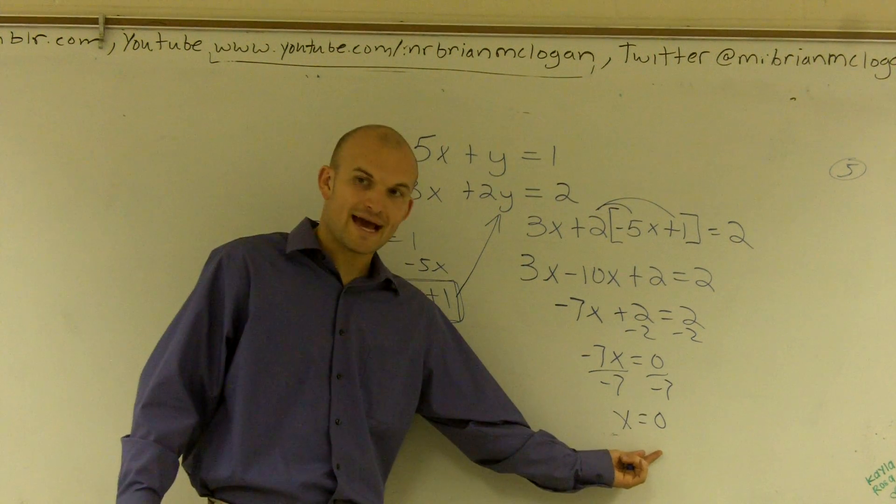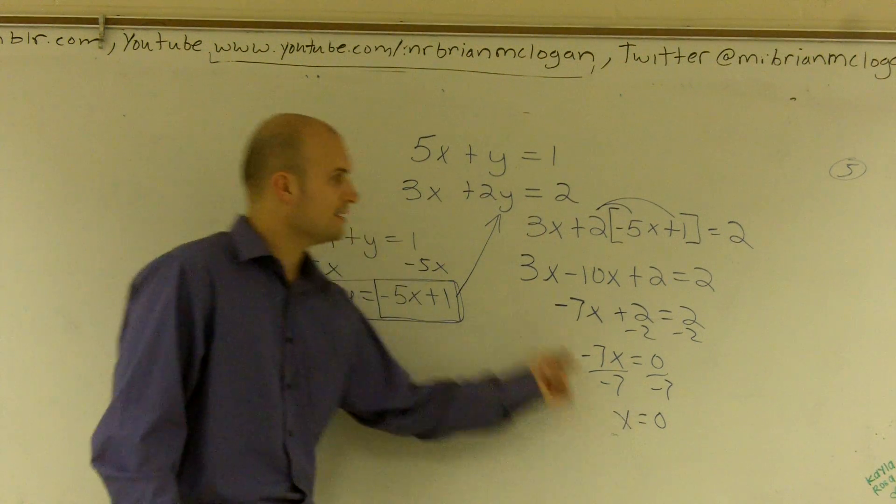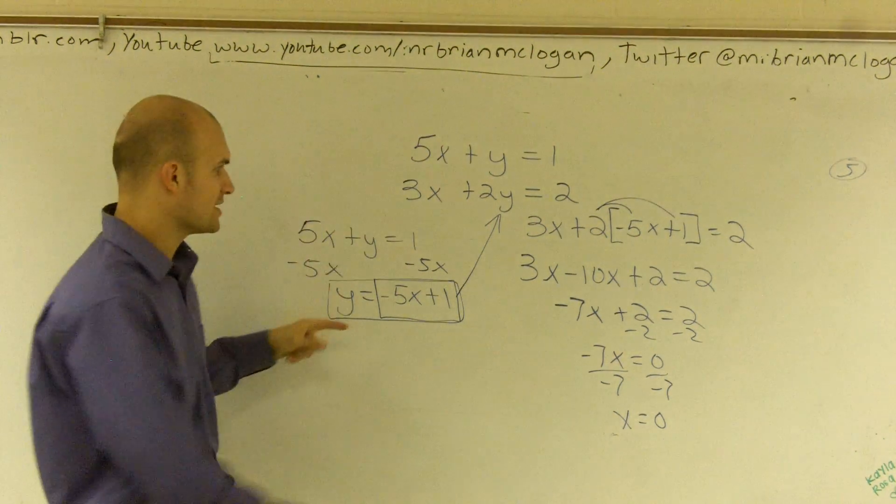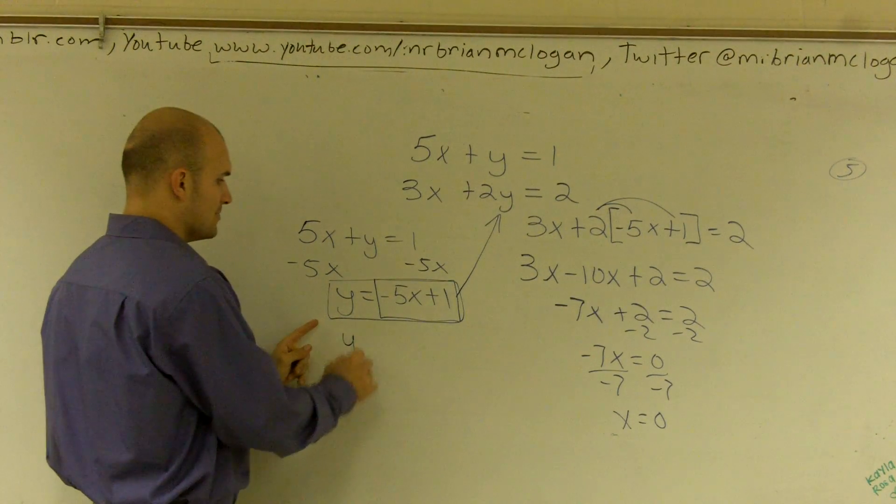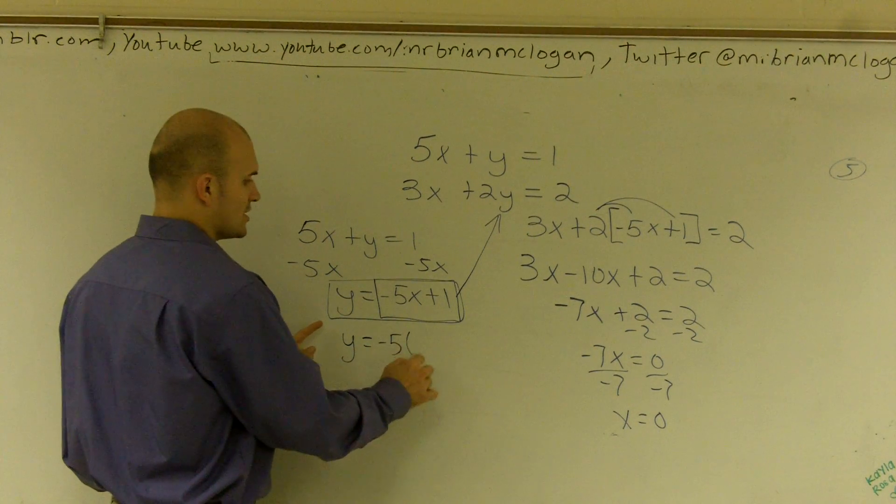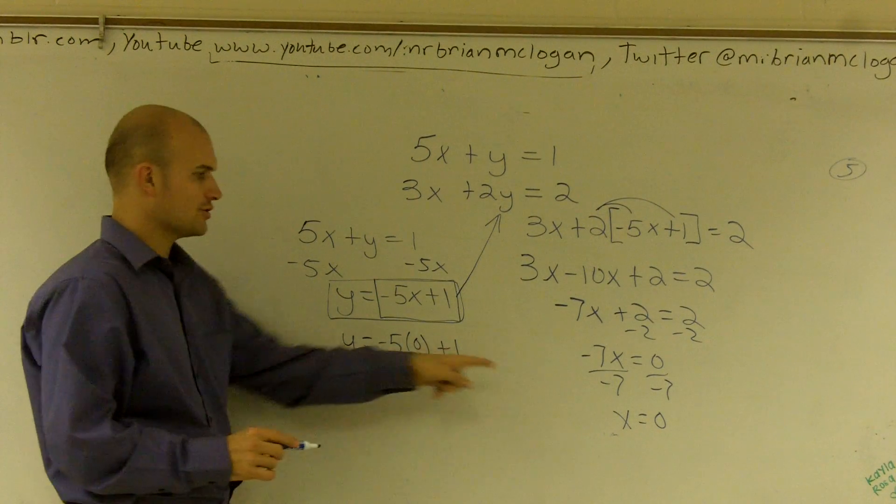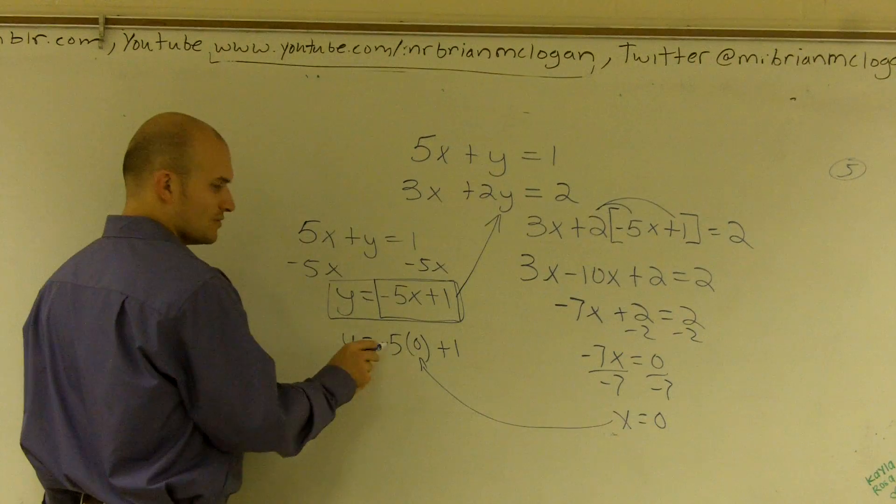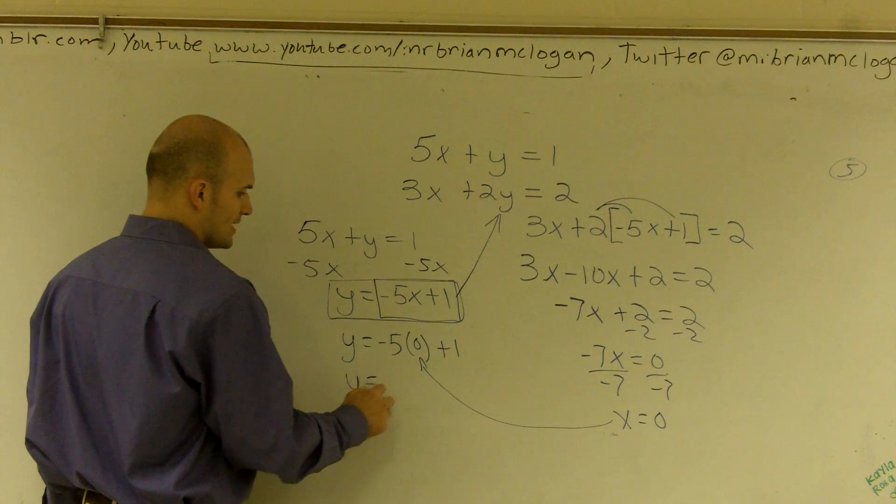So now that I've found the value of x, what I can do is I can plug that back into either one of my equations. Now it's easiest to plug it into the equation already solved for y. So when I plug 0 in for x back into that first equation, well negative 5 times 0 is 0, so y equals 1.